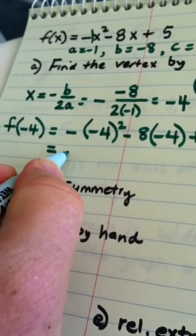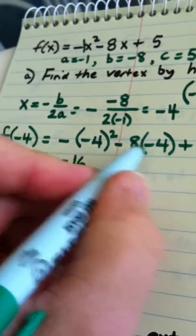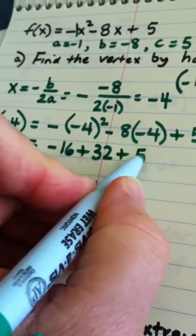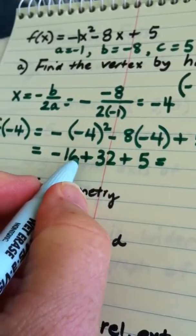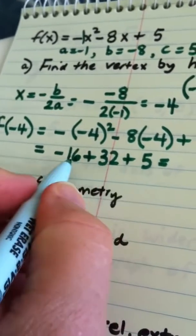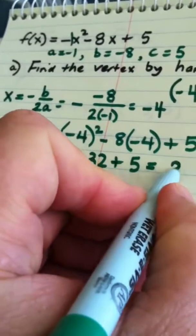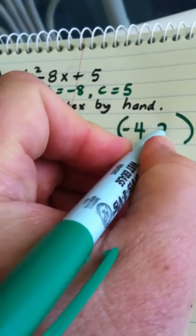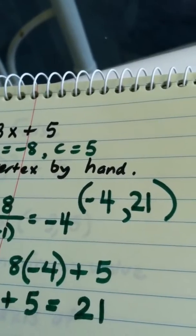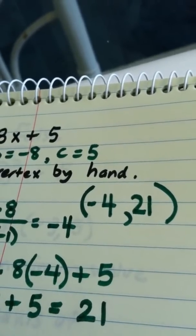This is 16, but this is the opposite of 16, plus 32, plus 5. So we end up getting what? 16 plus 5, right? Yep, 16 plus 5 is 21. So the vertex of this parabola is the ordered pair negative 4 comma 21.